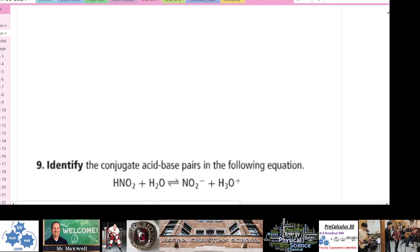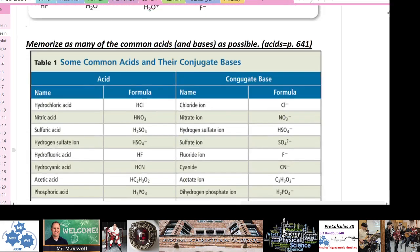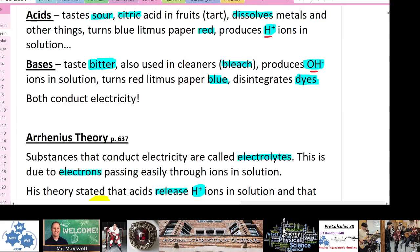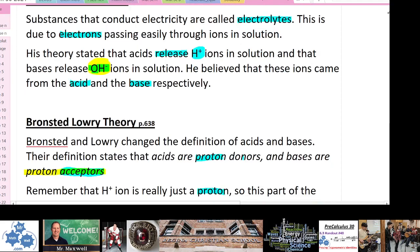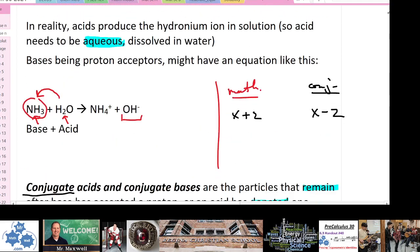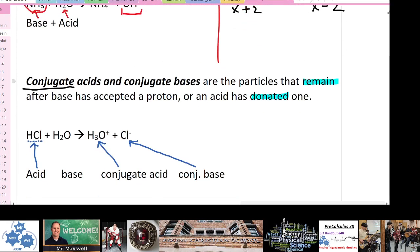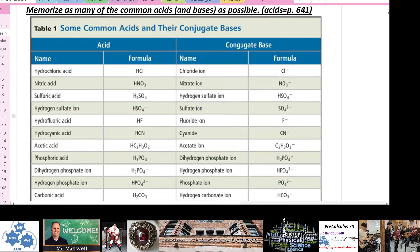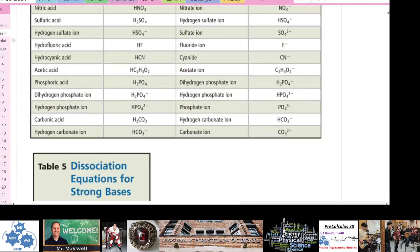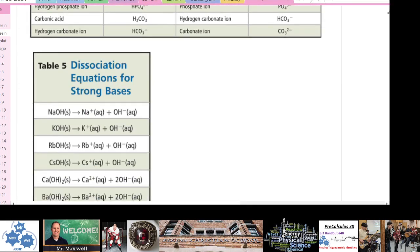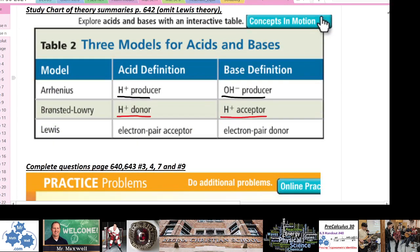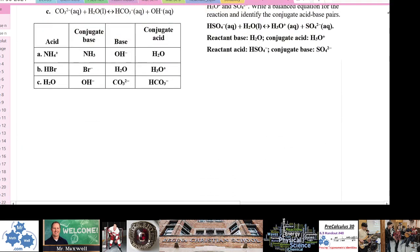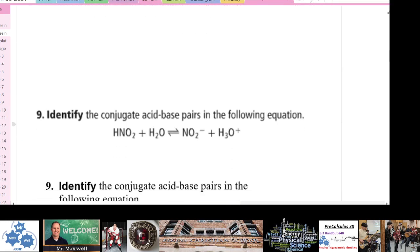That's our first introduction to acids and bases. We covered common characteristics, the Arrhenius and Brønsted-Lowry theories, conjugate acids and bases, and the hydronium ion. Please memorize as many of the common acids and bases as you can, know the differences between the theories, and be able to answer the types of questions we worked through today.